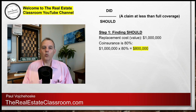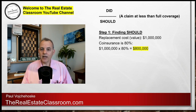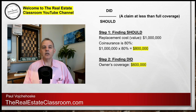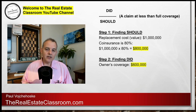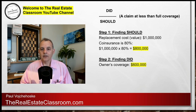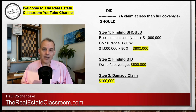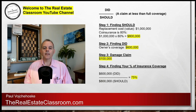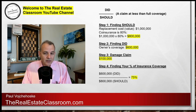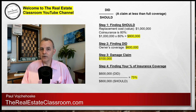Step one: we need to determine how much coinsurance coverage the owner should have had. Doing the math, it's one million dollars times 80%, which equals $800,000 in coverage — that is the 'should.' Step two is finding the 'did' — how much coinsurance coverage did the owner actually have? In this case, the owner only had $600,000. Step three: we have a $100,000 claim because a storm came through. Step four: we divide $600,000 — the coverage the owner did have — by $800,000 — the coverage they should have had — giving us a coinsurance coverage percentage of 75%.